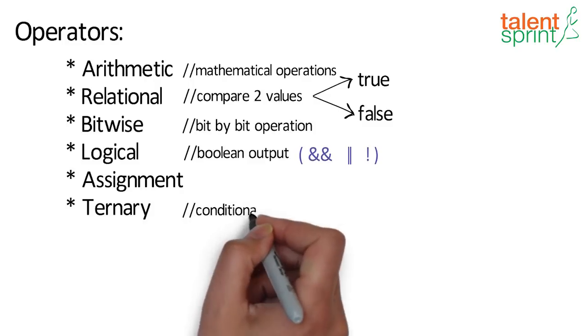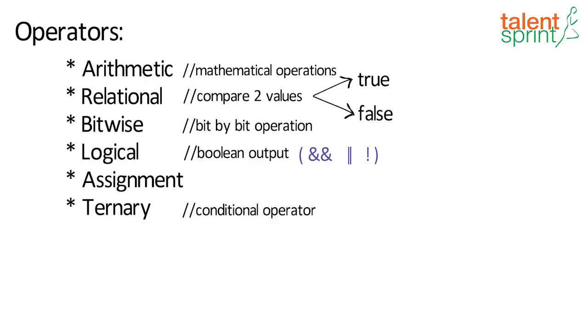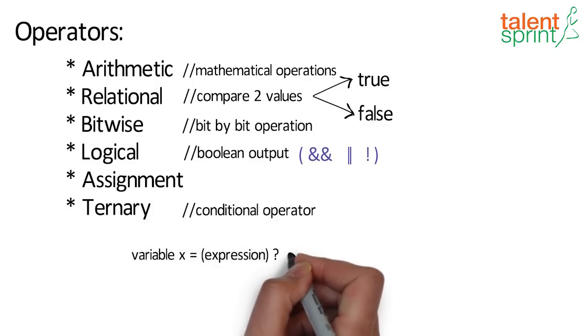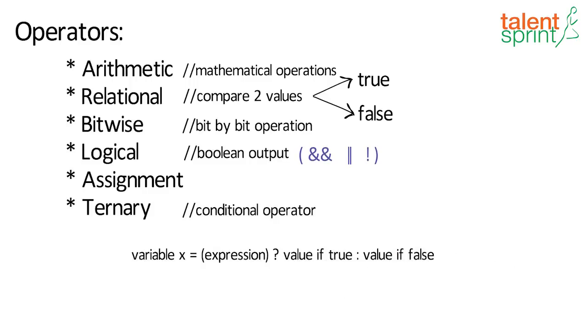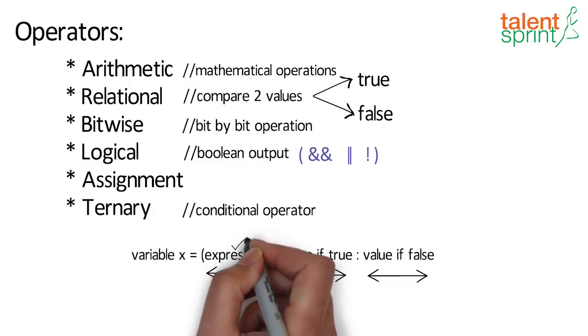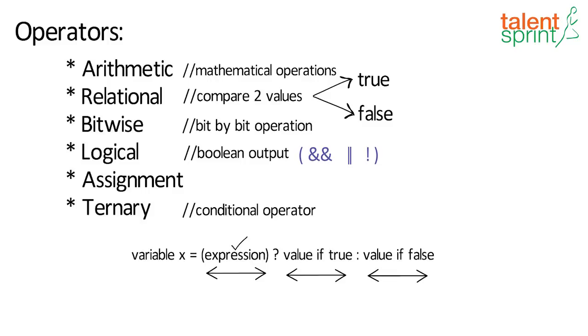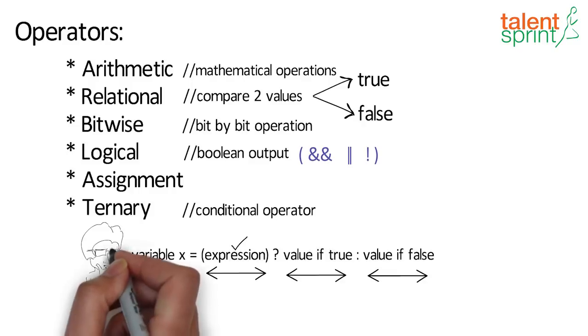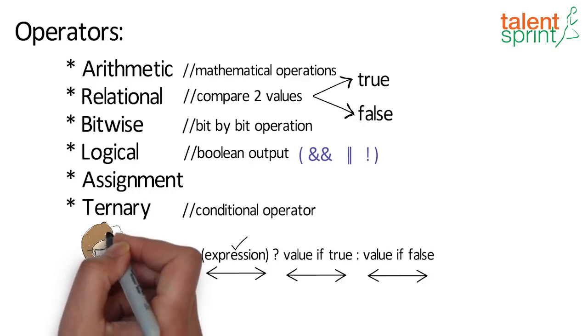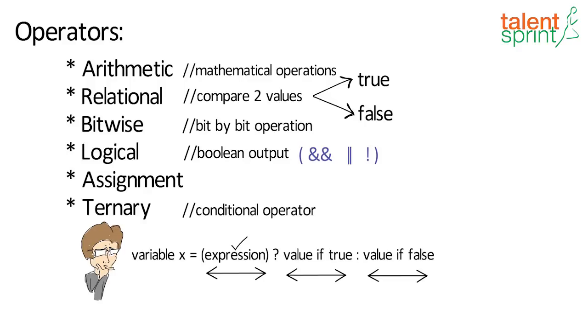And finally ternary operator also known as conditional operator. This operator consists of three operands and is used to evaluate boolean expressions. The goal of the operator is to decide which value should be assigned to the variable. And the syntax is variable x expression and depending on the value of the expression whether it's true or false the right value is printed.